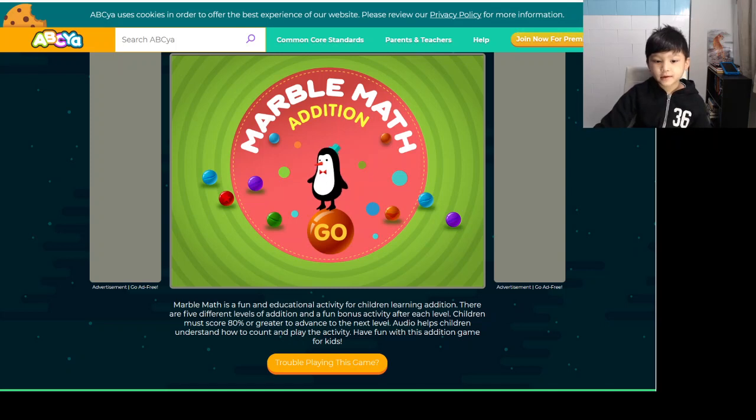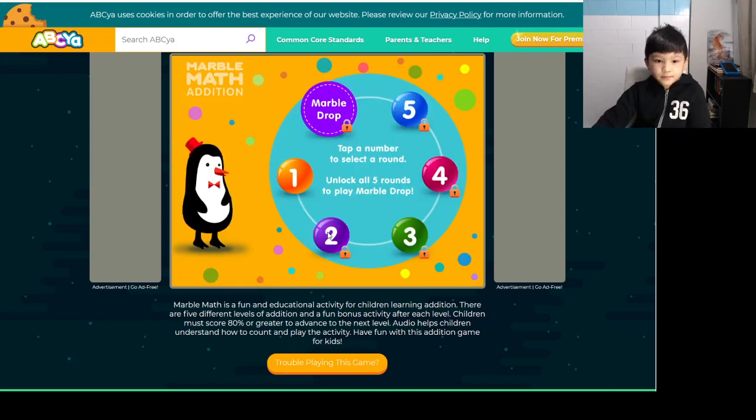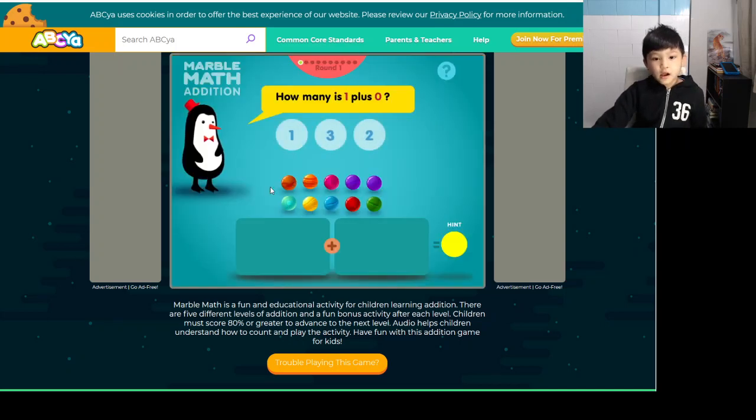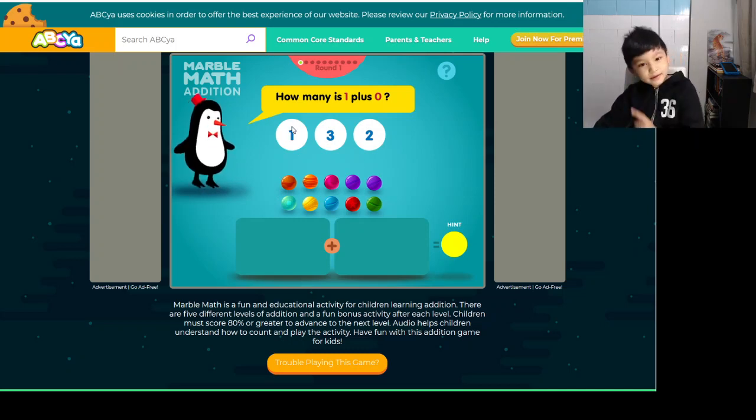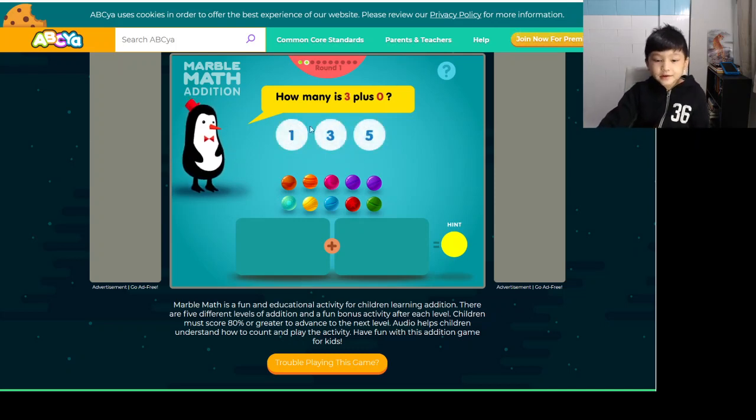So we're going to press go. Okay, so we're going to press number 1. Okay, what's 1 plus 0? We know that anything plus 0 is the same number, which means 1 plus 0 has to be 1. And same thing, 2 plus 0, the answer is 2.